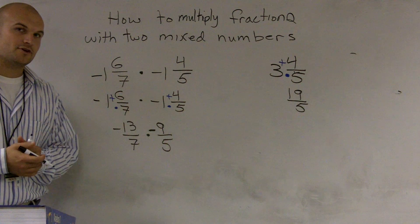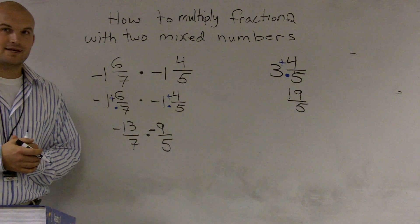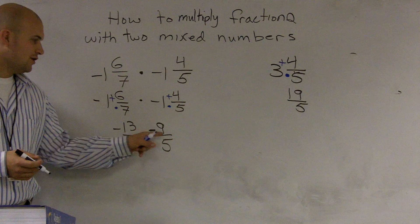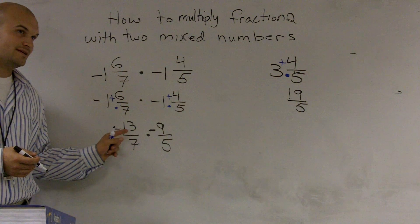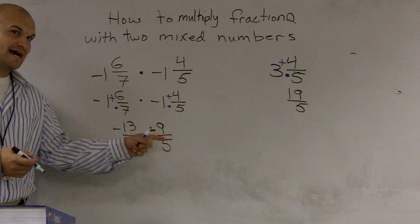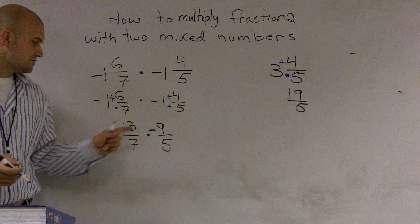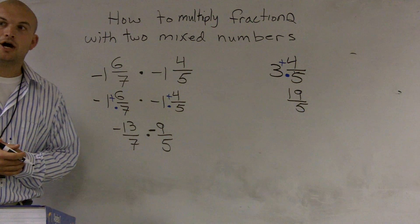All right. Nine times 13. I do not know what that is off the top of my head. But I do know that nine times 10 is 90, and then nine times three is 27. So therefore, nine times 13 would be 117.